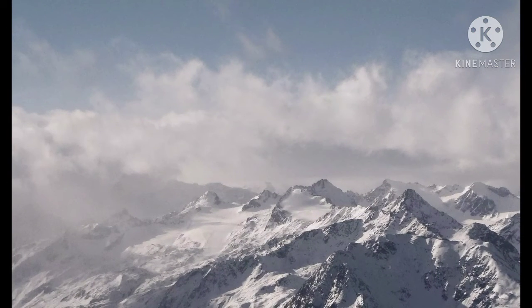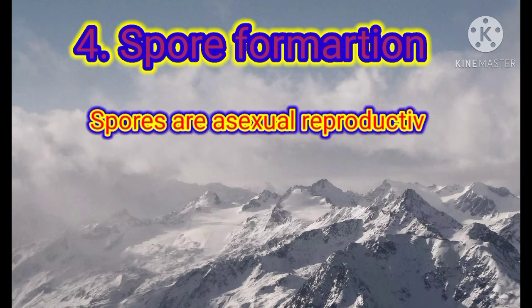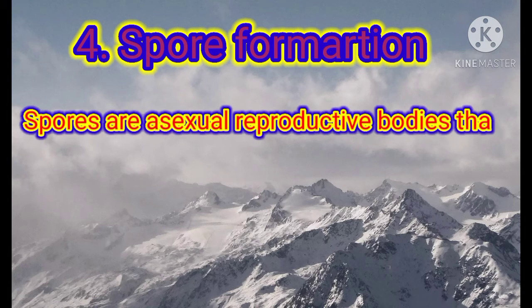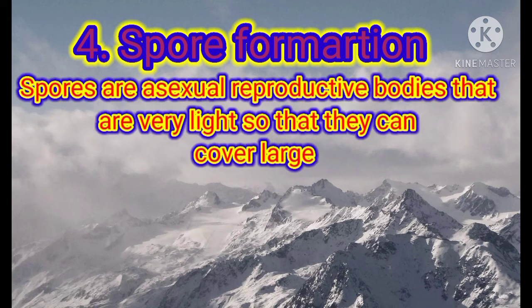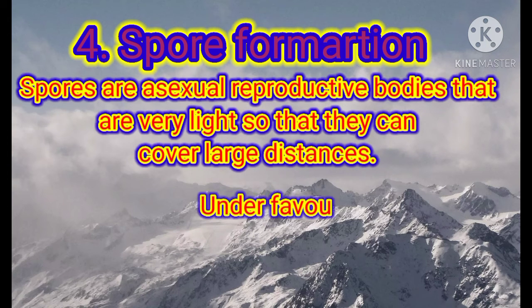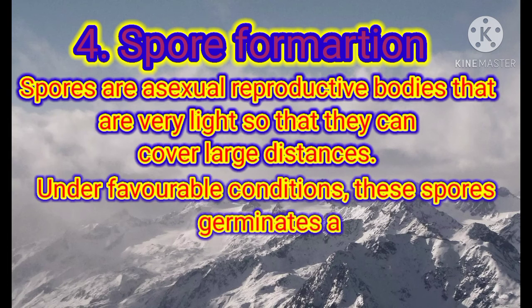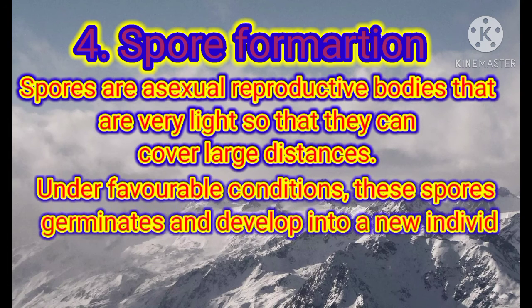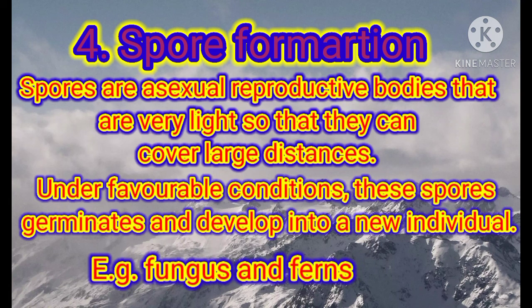The next type is spore formation. Spores are asexual reproductive bodies that are very light so that they can cover large distances. Under favourable conditions, these spores germinate and develop into a new individual. For example, fungus and ferns. These are the types of asexual reproduction.